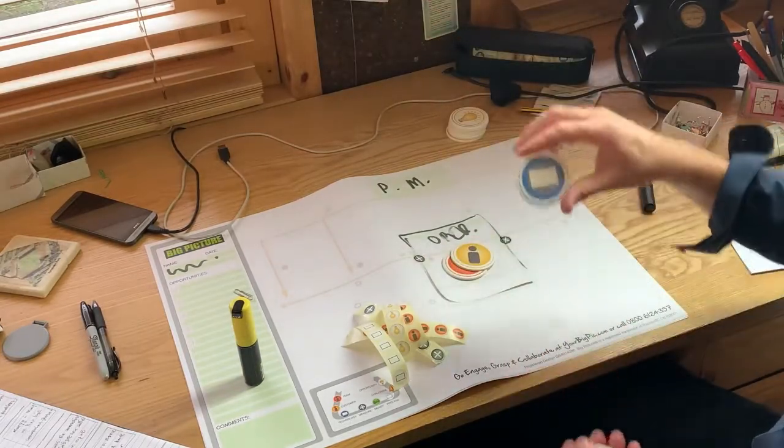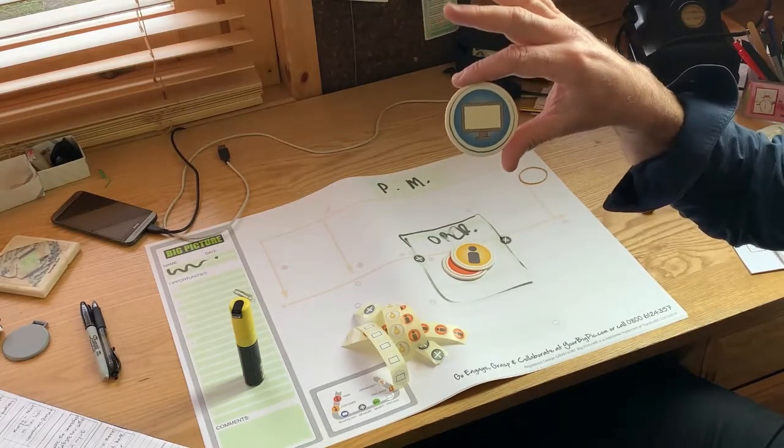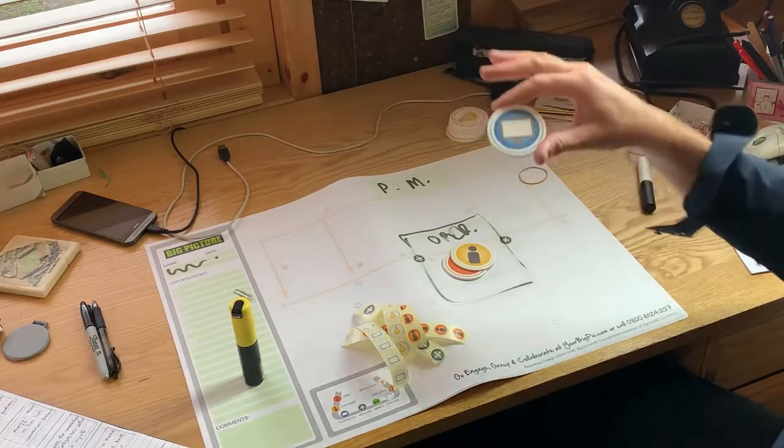We then move on to the grasp stage of the path. We've got the technology, the blue symbol, which could mean anything in terms of computers, devices, handhelds, mobiles.